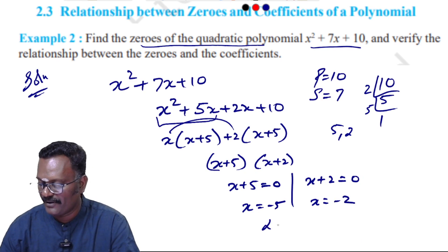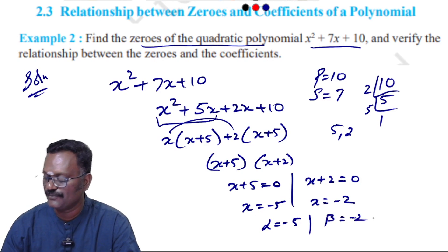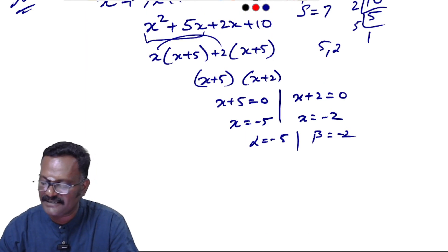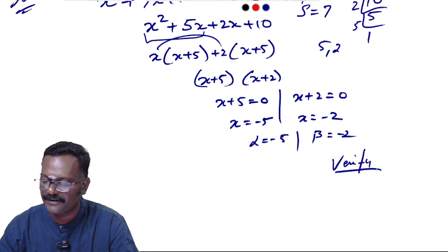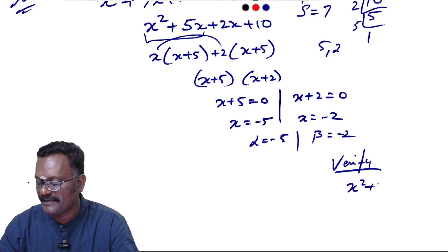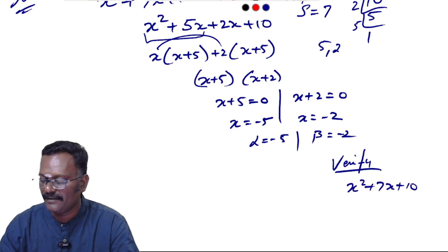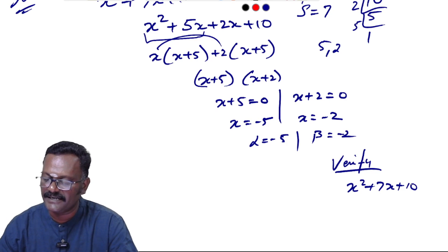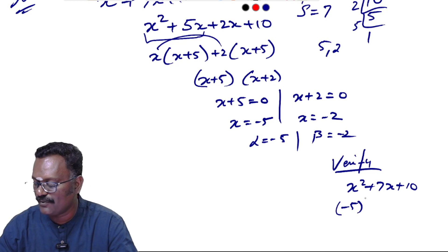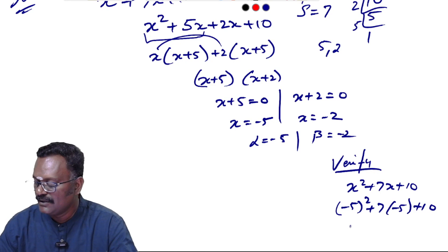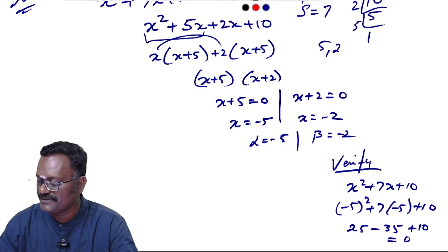Factoring gives us (x + 5)(x + 2) = 0, so x = -5 and x = -2. Here alpha (α) = -5 and beta (β) = -2. We can verify: substituting x = -5 gives 25 - 35 + 10 = 0. That is correct.